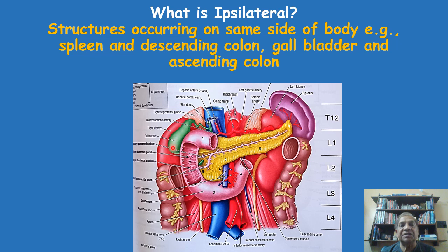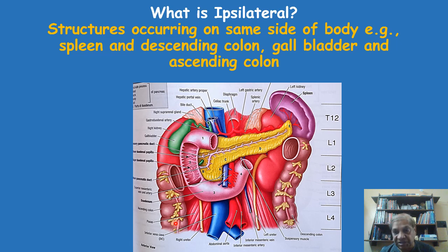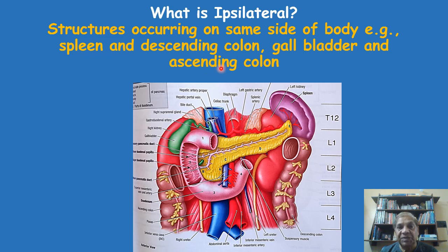Similarly, if you compare the gallbladder in green color with the ascending colon, they are also called ipsilateral because both occur on the right side of the median plane. However, you cannot compare the gallbladder with the spleen — since they occur on opposite sides of the median plane, they should not be called ipsilateral. So ipsilateral means occurring on the same side of the median plane in relation to one another when we compare two structures.